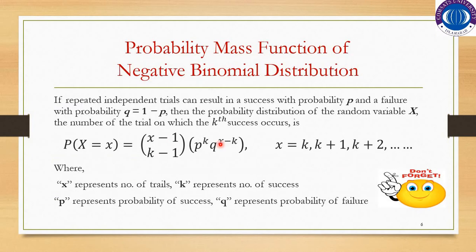The probability mass function of negative binomial distribution — as it is a discrete distribution — states that if repeated independent trials can result in a success with probability p and a failure with probability q, then the probability distribution of the random variable x, the number of the trial on which the kth success occurs, is: P(X = x) = C(x−1, k−1) · p^k · q^(x−k), where x = k, k+1, k+2, and so on.